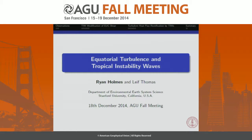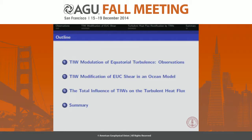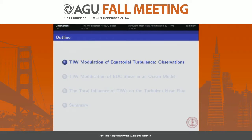I'm a PhD student at Stanford working with Leif Thomas. Today I'm going to tell you about my work looking at how tropical instability waves influence small-scale turbulence in the upper equatorial Pacific. This work is motivated by a couple of recent sets of observations, which I'll briefly highlight in the first section. In the second section I'll talk about using an ocean model to look at the large-scale dynamics driving that modulation — in particular how tropical instability waves modify the equatorial undercurrent shear. In the third section I'll look at the implications, specifically the total influence of tropical instability waves on the turbulent heat flux, with obvious implications for the equatorial SST budget in the Pacific.